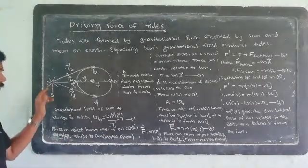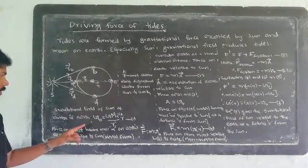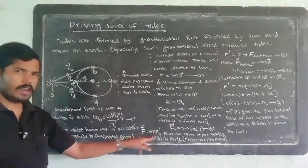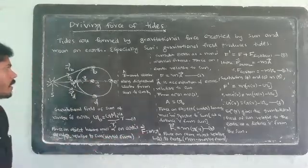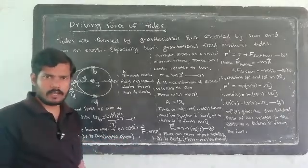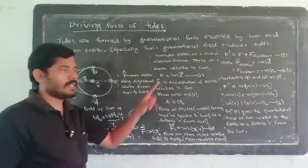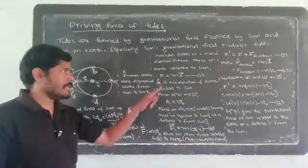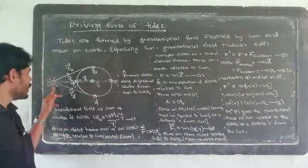The center of the earth is in an inertial frame; the sun is comparatively stationary. The gravitational force on an object having mass m situated at the center of the earth is m·G0. This is the force on the earth by the sun.